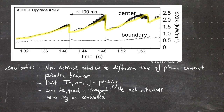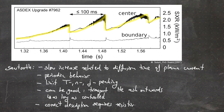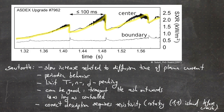Sawtooth instabilities can also trigger NTMs, something we already discussed in video nine. To correctly describe the saw teeth, we actually need to take into account resistivity — we have to go beyond ideal MHD — because just before the sawtooth crash we observe a rotating (1,1) island in the center, and as you know, islands require finite resistivity.